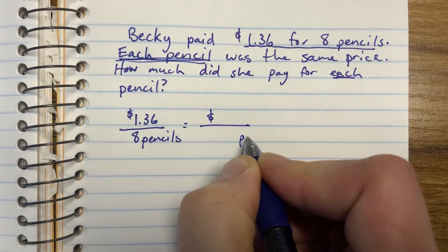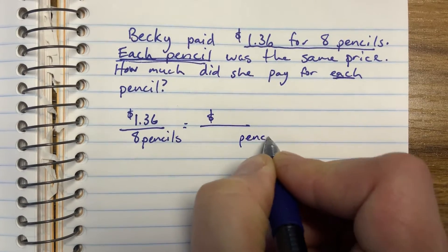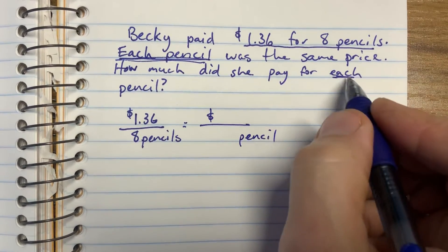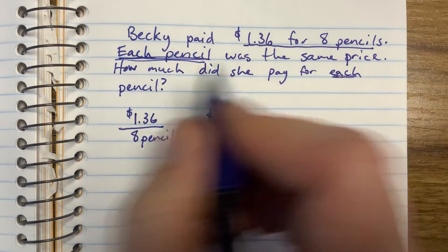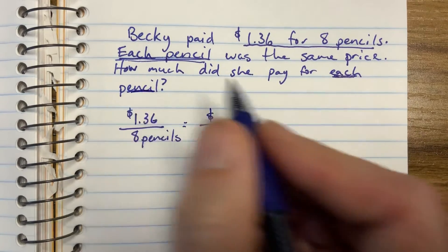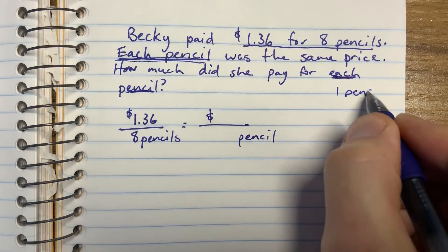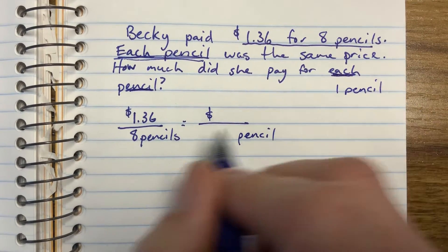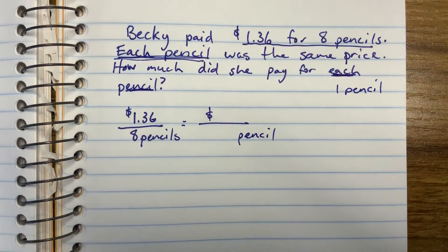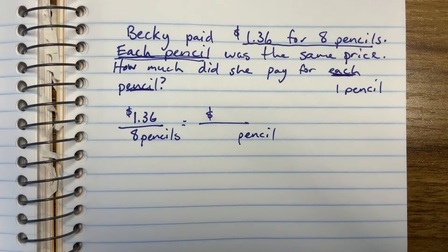Money's on top. Pencils are on the bottom. And where are we putting this each pencil? One pencil. Put that into your proportion, cross multiply and divide, and you will get the answer. Good luck. See you on the next problem.